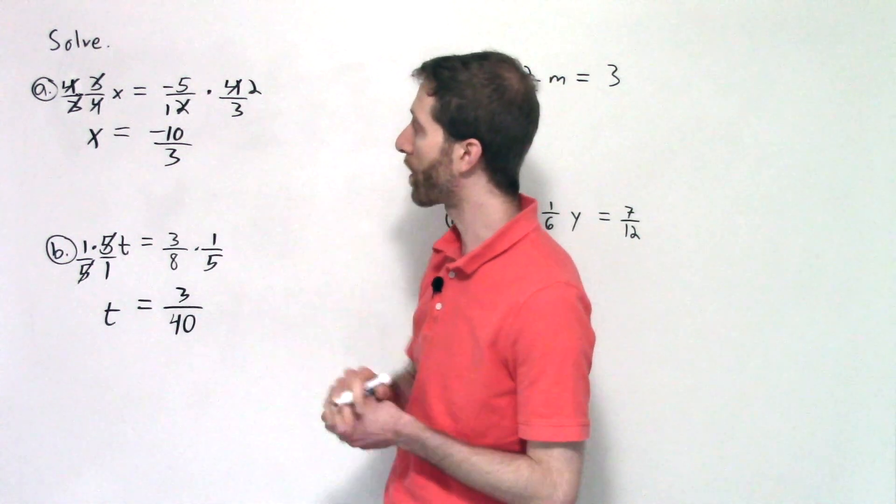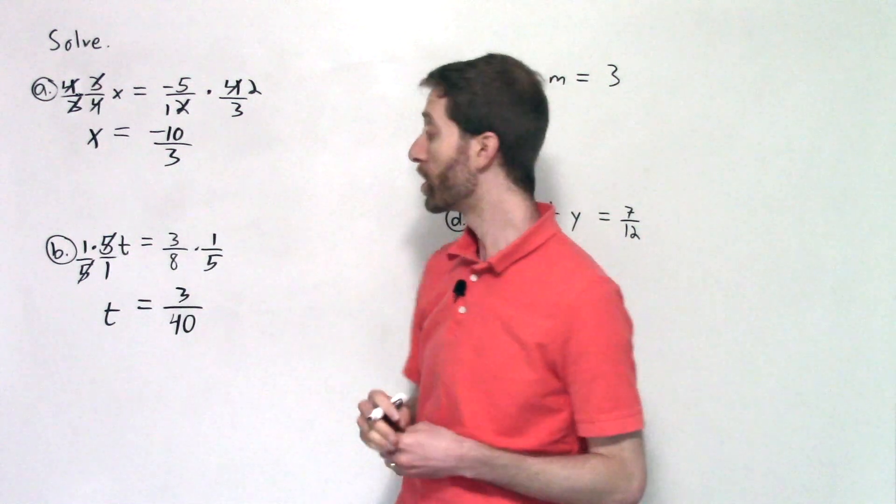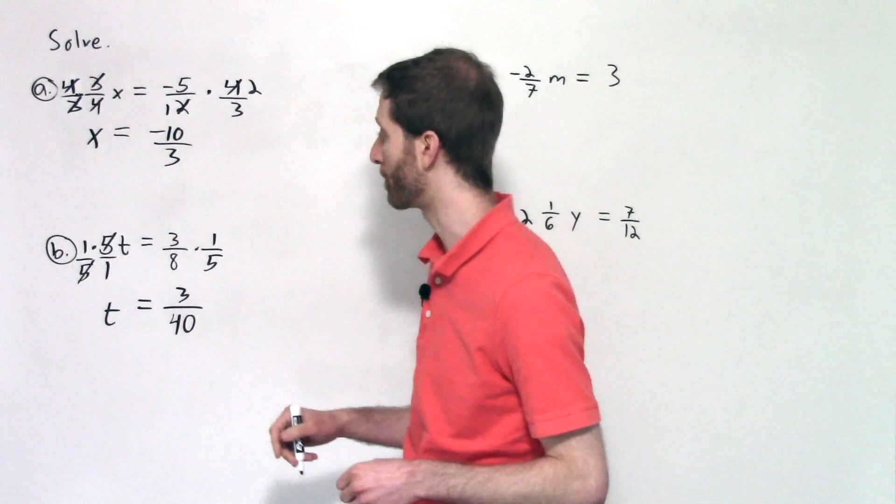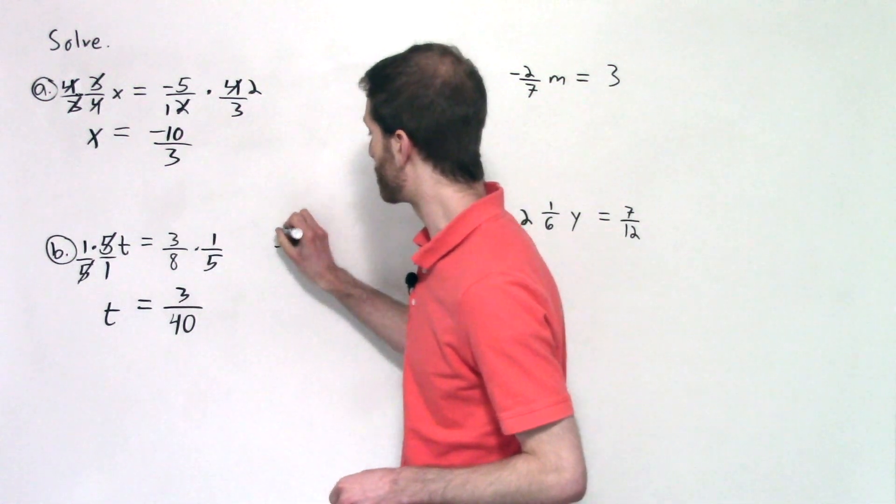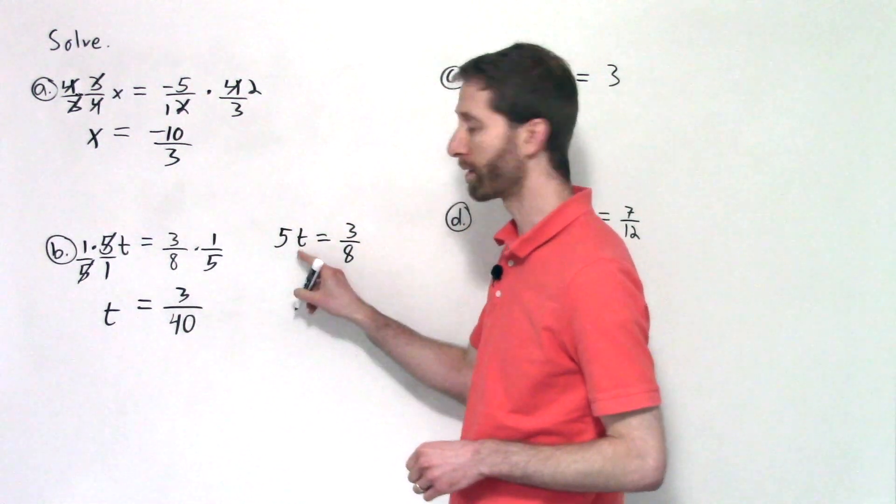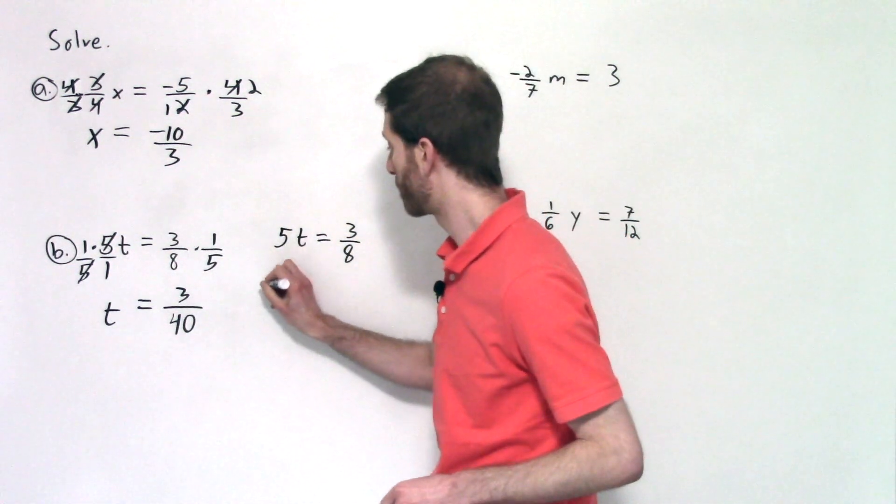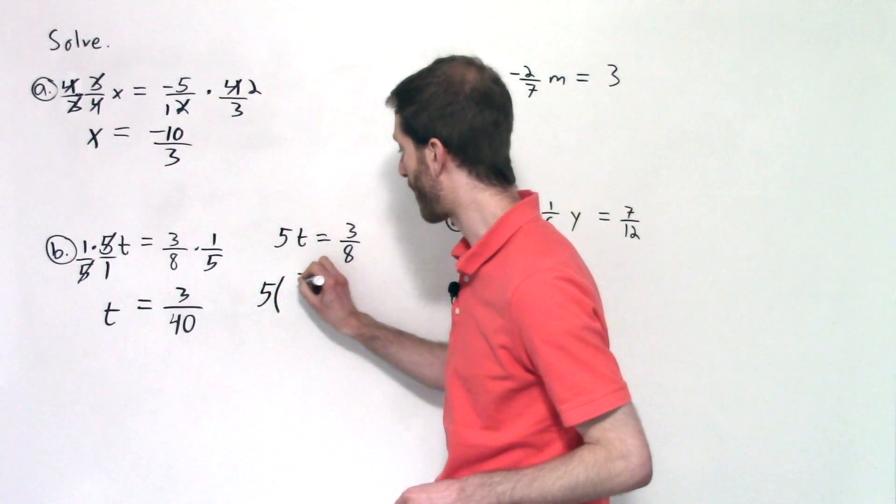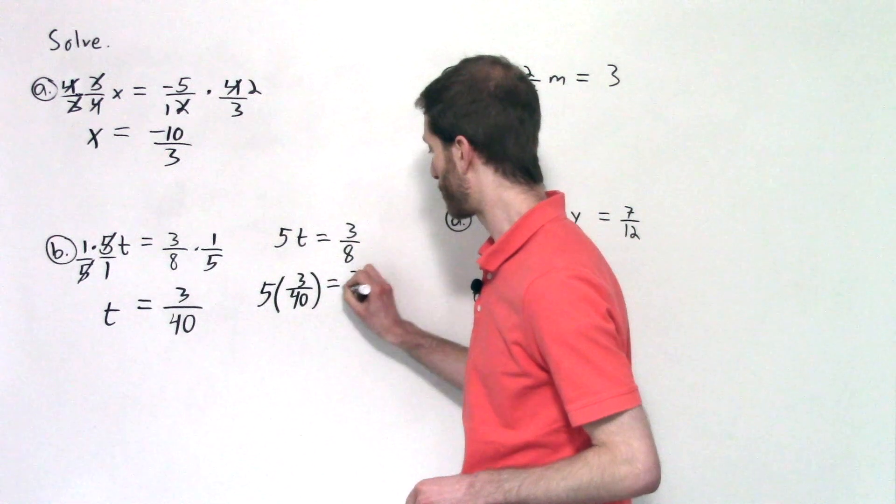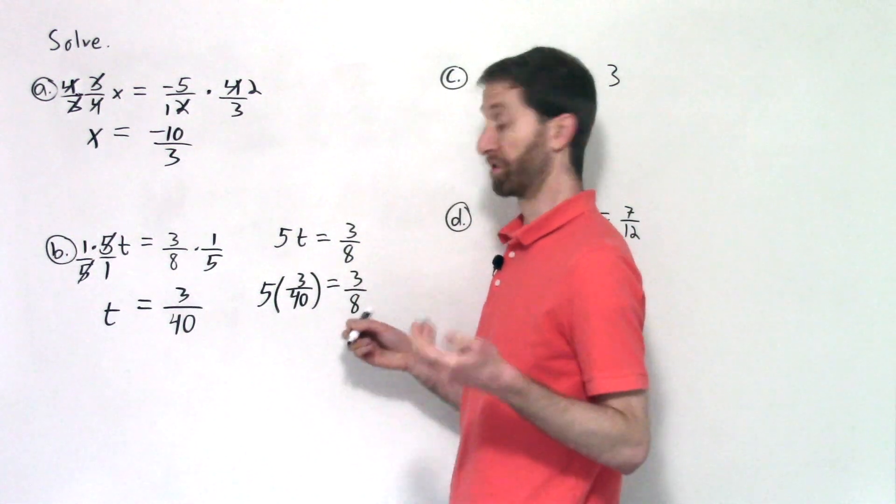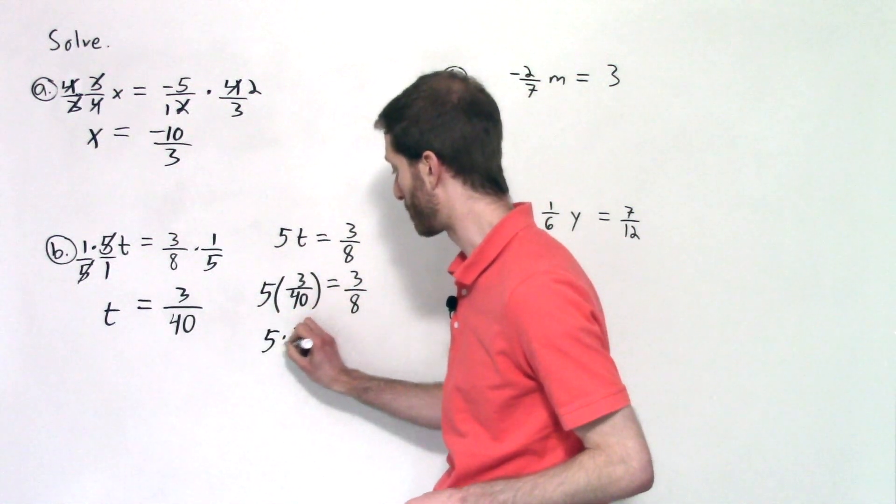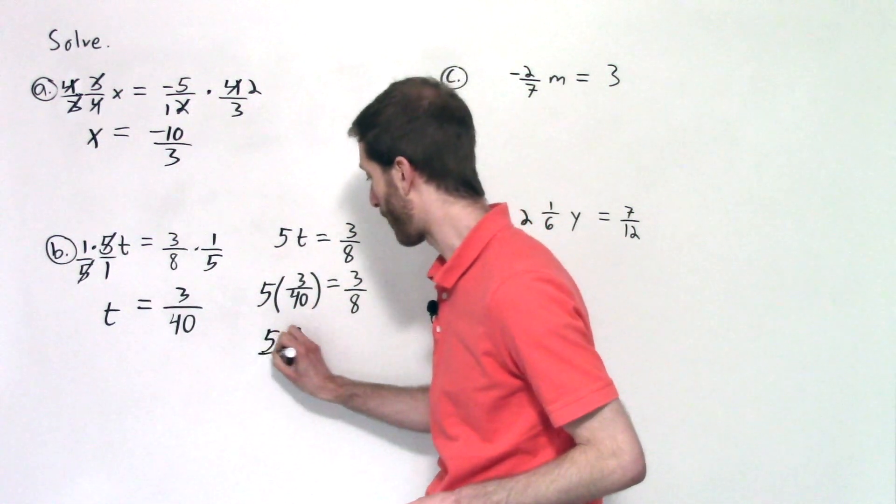Just as a reminder, I didn't show it in part A, but you can do it in any of these problems. You could check your work by simply evaluating your answer into the original problem. The original problem was five t is equal to three-eighths. So I'll take my answer and I will evaluate it in for t. So that's going to be five times the t value is three-fortieths. And that's equal to three-eighths. So I just will simplify it out. So I've got five times three-fortieths is what I'm doing.